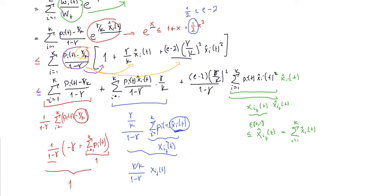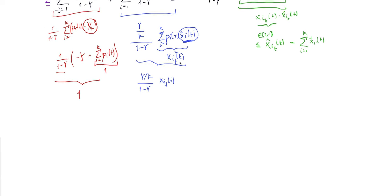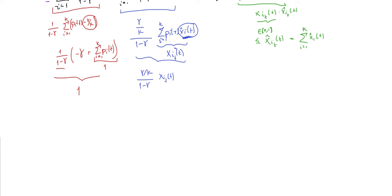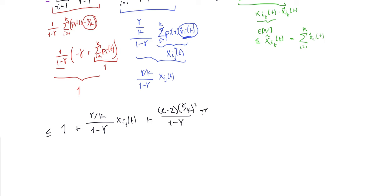Putting it all together, W(t+1)/W(t) ≤ 1 + (gamma/k)/(1-gamma) * x_{i_t}(t) + (e-2)*(gamma/k)²/(1-gamma) * sum_{i=1}^{k} x_i_hat(t). At this point I'm going to stop the video and continue the rest of the proof in the next video. See you there.